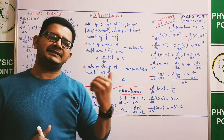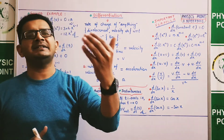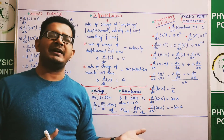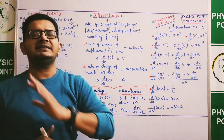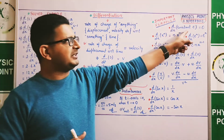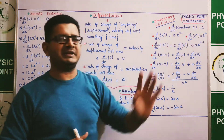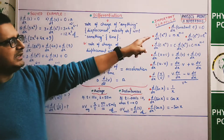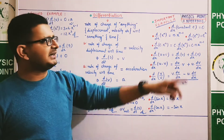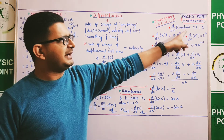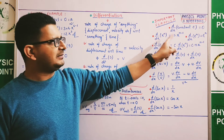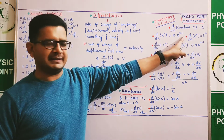Constant चीज़ का rate of change zero होता है। जैसे five rupees का note — आज से 10 साल पहले भी five था, आज भी five है, आगे भी five रहेगा। तो उसका rate of change zero होगा। Similarly एक और formula है: d/dx of x to the power n = n·x^(n−1). Means जो भी power है उसे multiply में लिख देंगे और power में से 1 घटा देंगे।